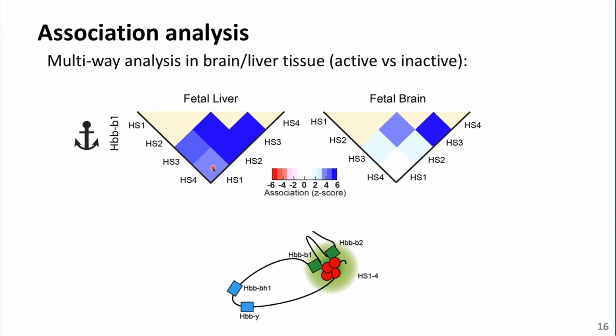We applied the same method in fetal brain, where we expect these genes are not active. In fetal brain, hypersensitive sites in the linear vicinity of each other cannot avoid being co-captured — that is expected due to proximity. But when you go further, HS2 — which is far from HS4 — and HS1 — which is far from HS3 and HS4 — do not show enrichment. This means that to highly activate the genes, these enhancers need to come together and co-cluster to help activate the beta-globin genes.